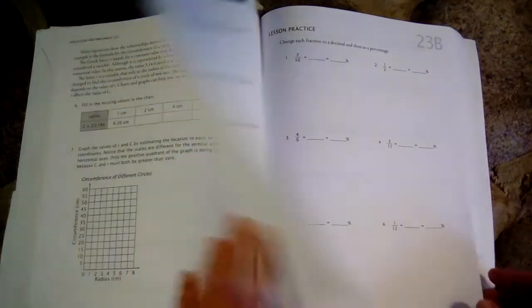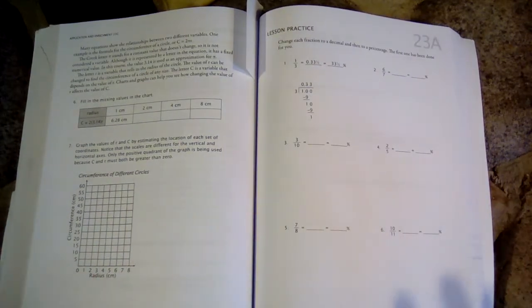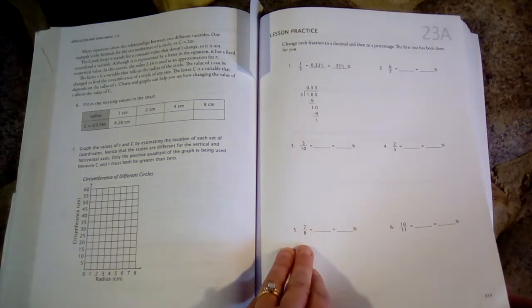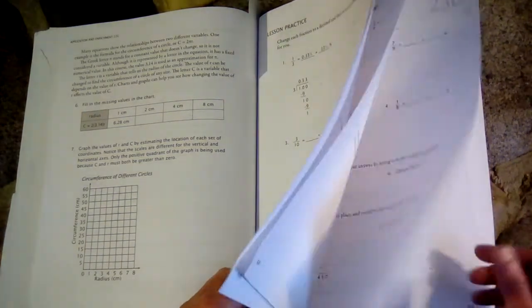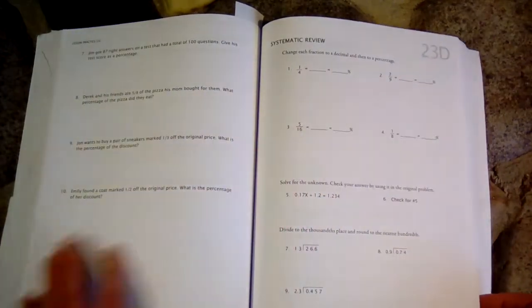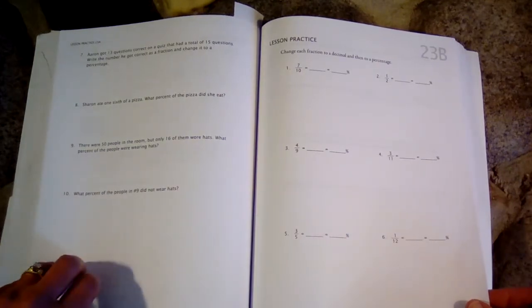So every homeschool family will probably use these worksheets differently. Some will probably do all of them, and some will do some of the worksheets, and not all of them. We don't usually do every single one of these 7 worksheets per week. I always make sure we do D, E, and F, the Systematic Review Pages, and we do one or two of these Lesson Practice Pages.